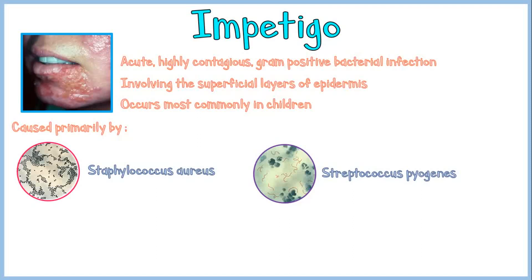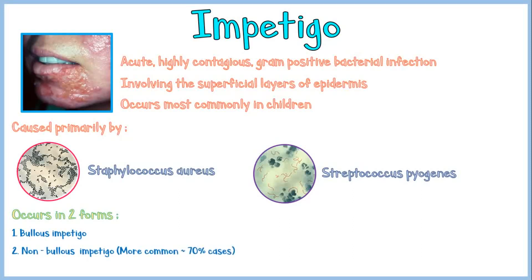Impetigo may occur in two forms. One is bullous impetigo, and the other form is non-bullous impetigo, which is the more common type, accounting for about 70% of cases.